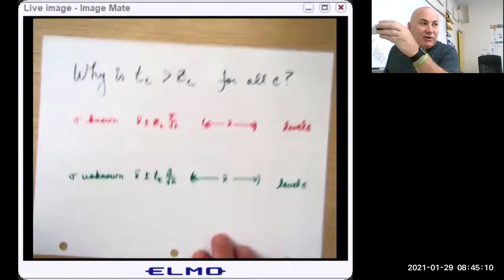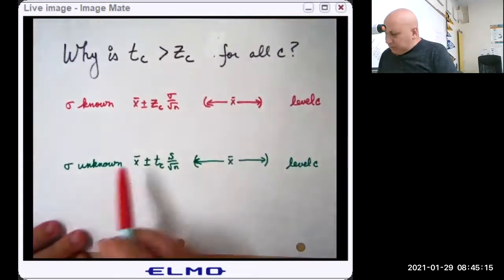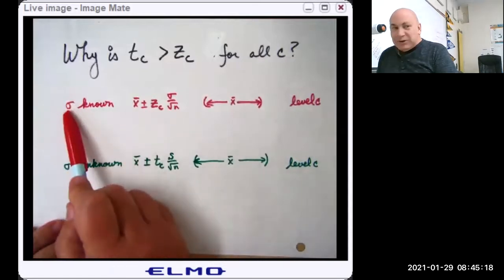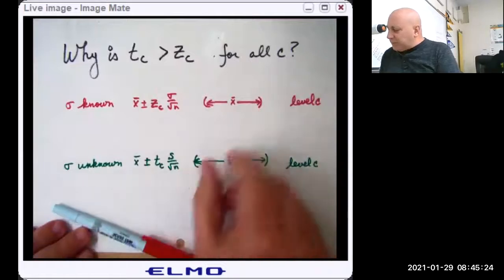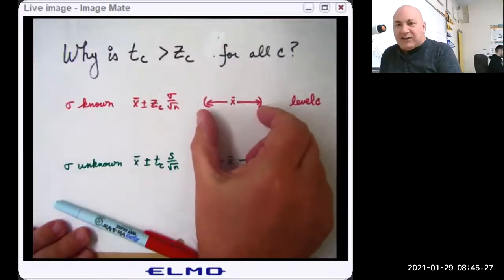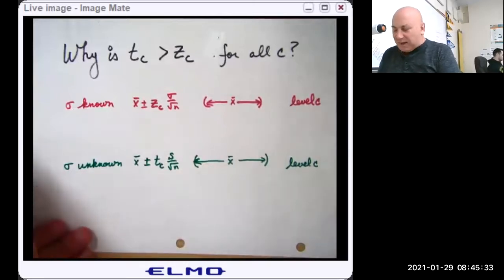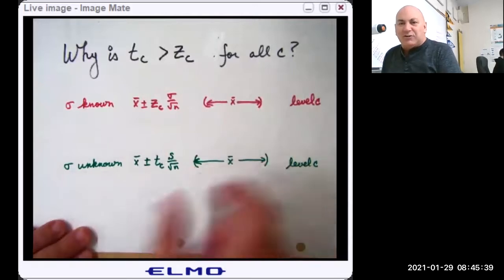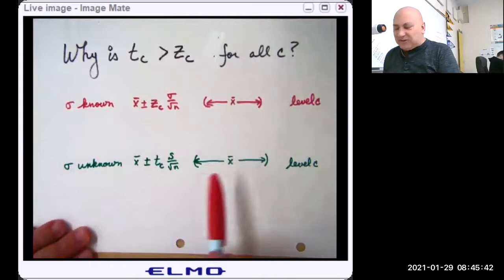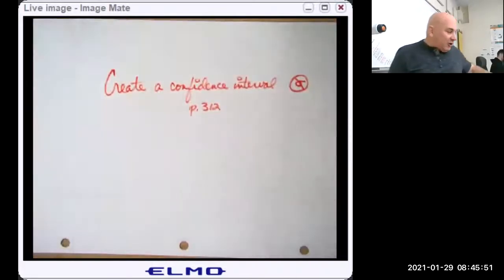So why is T critical always, always, always greater than Z critical for any confidence level C? Well, it's because if you know sigma, you know more about your population. So you can be 95 percent confident that this little interval here contains the true mu. If you don't even know sigma, you know less about the population, so you're going to need a bigger interval to be sure that it contains mu or to be sure that 95 percent chance that this interval contains mu.